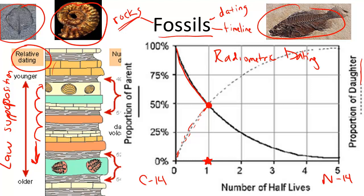So why do we care? Well, for centuries, evolutionary biologists have been trying to uncover the mystery of species formation and extinction. Further evidence for species that may have existed millions of years ago, such as the trilobite, but that we might have no record of today, can explain key gaps in human evolution or in organismal evolution altogether.